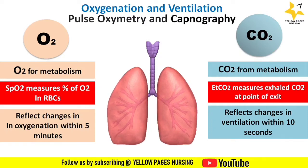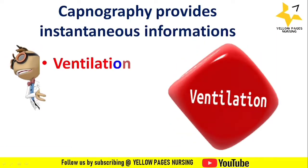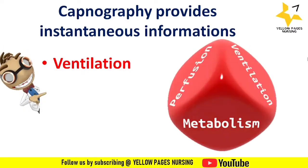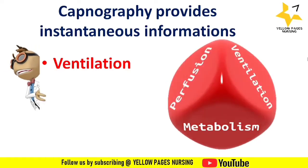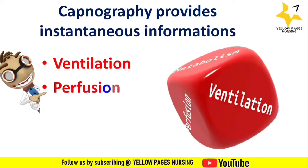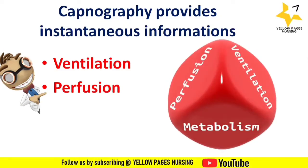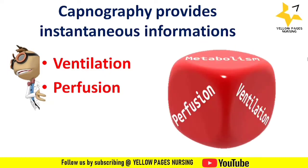In short, capnography gives an immediate picture of the patient's condition, whereas pulse oximetry is delayed. For example, if you hold your breath while connected to both devices, capnography immediately shows apnea, whereas pulse oximetry oxygen saturations will remain normal for a prolonged period. Capnography provides instantaneous information on ventilation, perfusion, and metabolism — explaining how effectively CO2 is eliminated, transported, and produced.